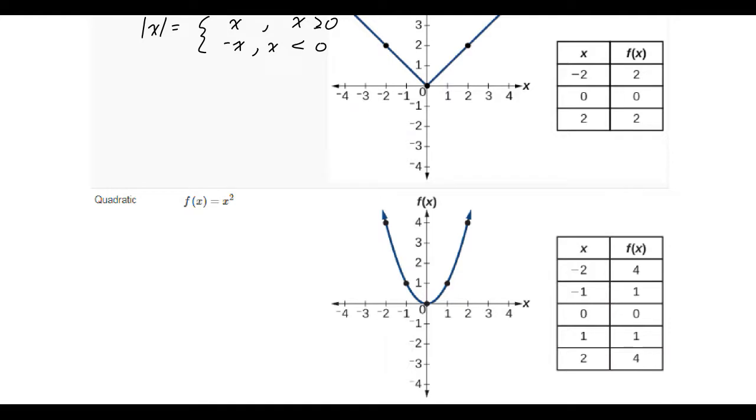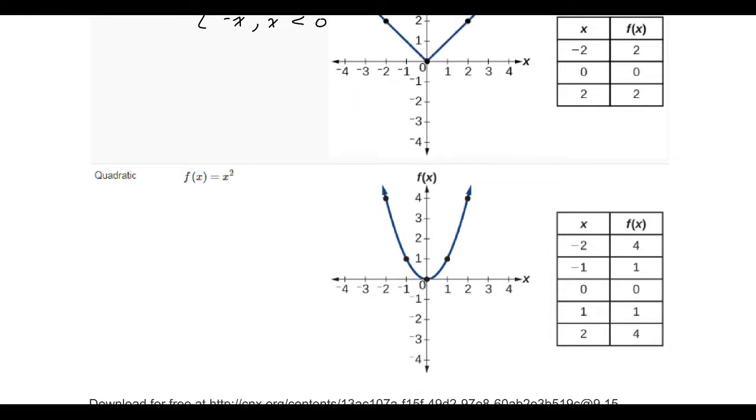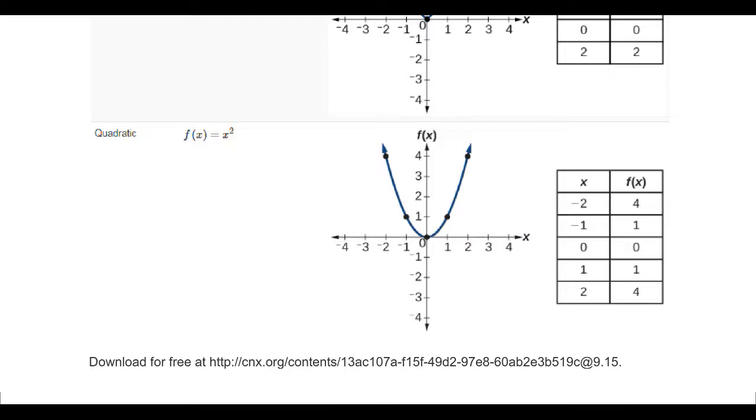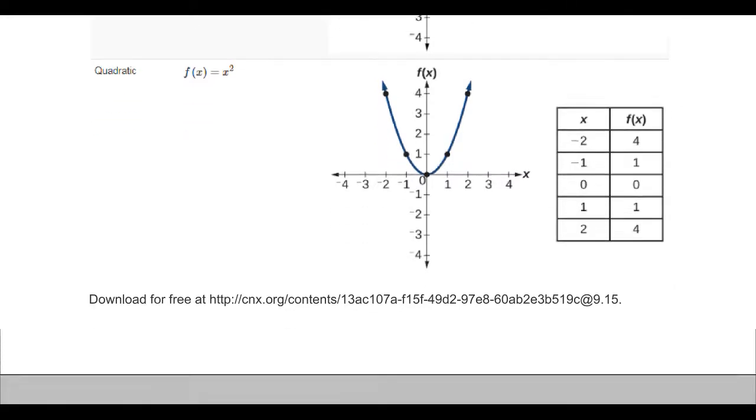Next we have the quadratic function, f of x equals x squared. The best description of this is it has a u shape. It is a parabola is the official name for that, and it curves. It actually curves and changes in a linear fashion. The way that the second differences change is in a linear fashion.